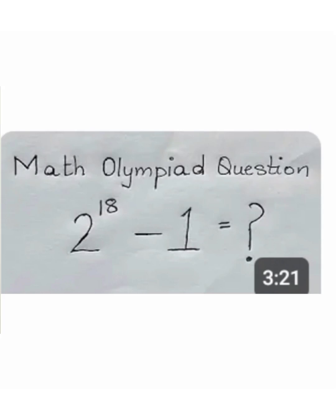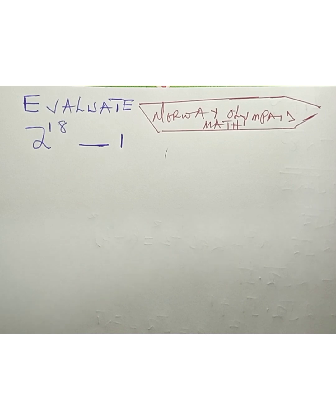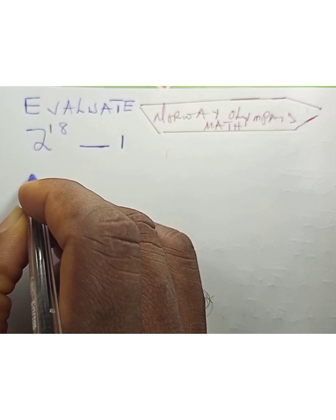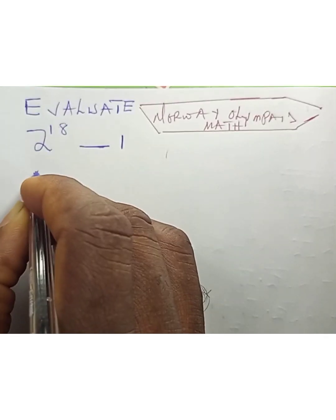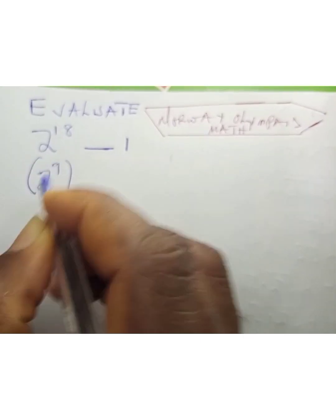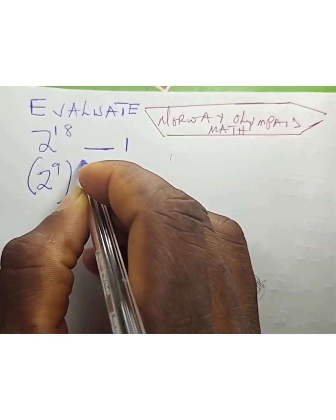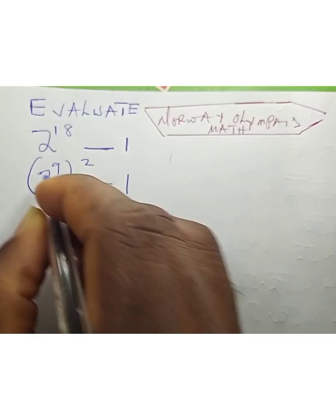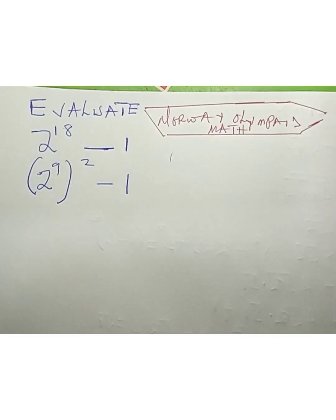Hello friends, welcome. We are asked to evaluate 2 raised to the power 18 minus 1. To evaluate this, we can write this as 2 raised to the power 9 times 2, minus 1, because 9 times 2 is 18.